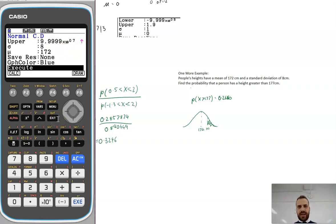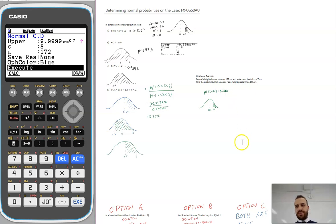That's determining normal probabilities.